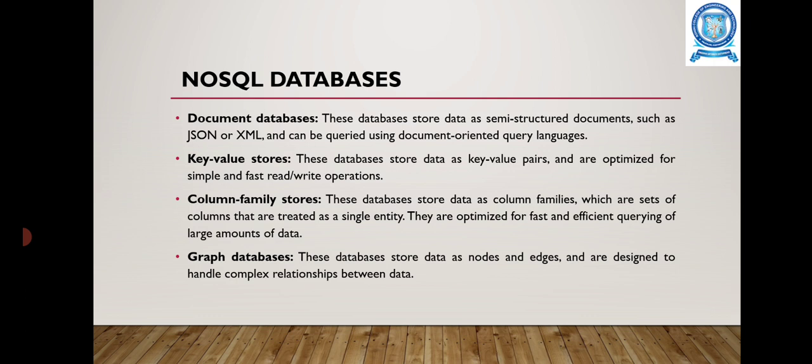The second category is the key-value store. These databases store data as key-value pairs and are optimized for simple and fast read-write operations. The third is the column family store, which stores data in column families that are sets of columns treated as a single entity, optimized for fast and efficient querying of large amounts of data. The fourth is the graph database, which stores data as nodes and edges and is designed to handle complex relationships between data.